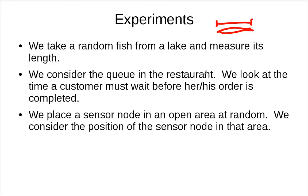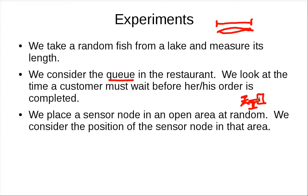Let's look at another example. We consider a queue in a restaurant where people go to a table and order their dinner. We look at the time that a customer has to wait before the order is completed. Again, this random variable — the waiting time — is continuous. There are so many possibilities; it's a real number.